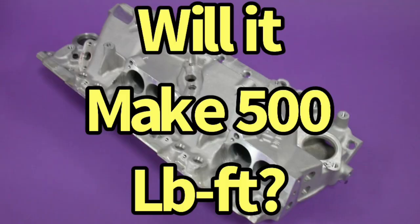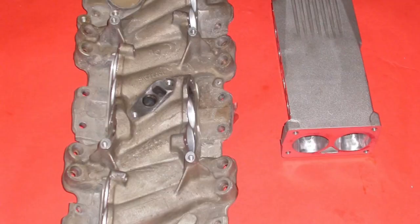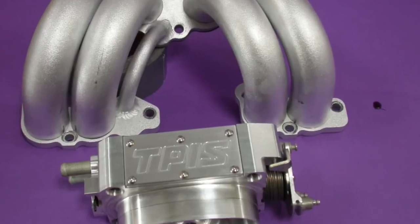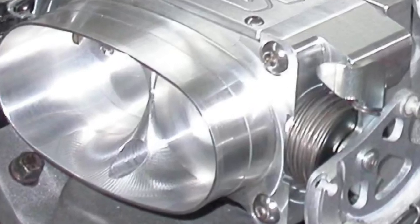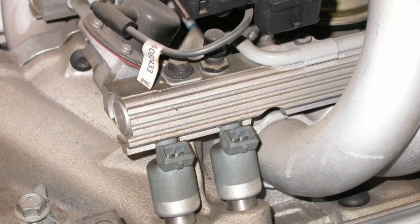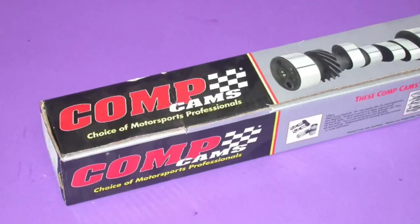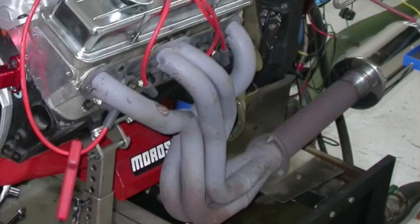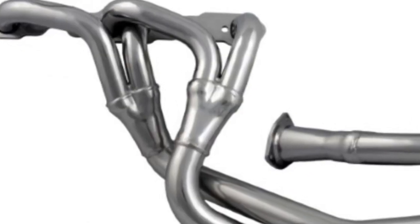The question is, can we make 500 foot-pounds of torque with a TunePort 350? We've got a ported lower manifold, big tube runners, a big throttle body, good cylinder heads, injectors, the right camshaft, and we've got a header test: four into one versus tri-Y.